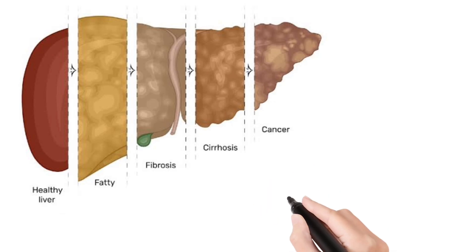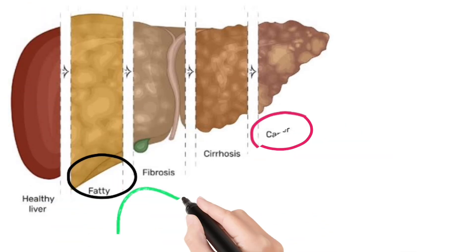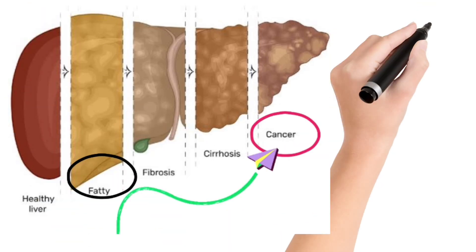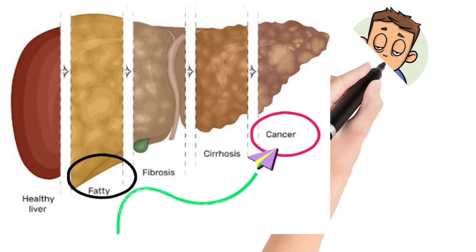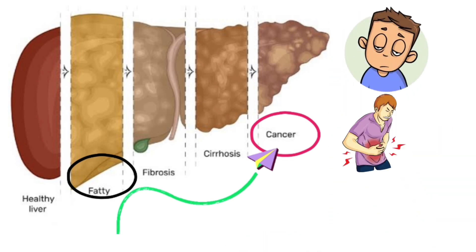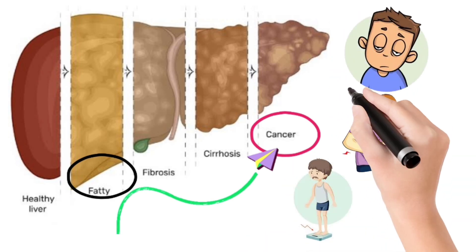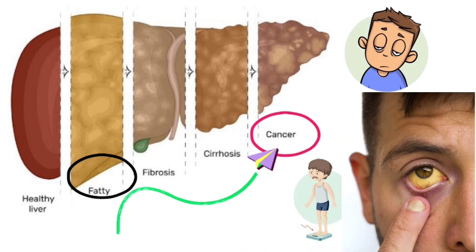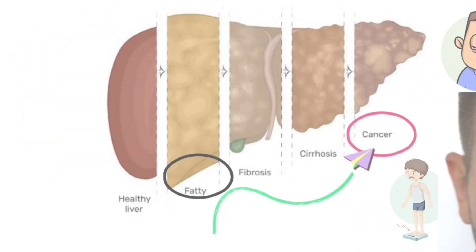Symptoms of fatty liver disease are often subtle and may not appear until the condition has progressed to a more advanced stage. Common symptoms include fatigue, abdominal pain, and weight loss. In some cases, people with fatty liver disease may experience jaundice, which is a yellowing of the skin and whites of the eyes.